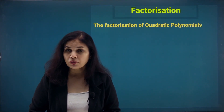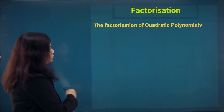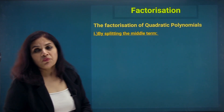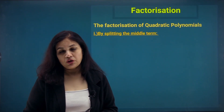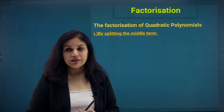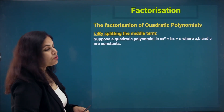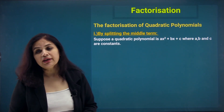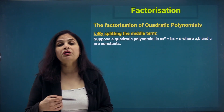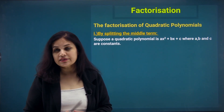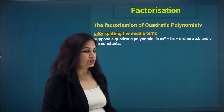When talking about quadratic polynomials, we are talking about polynomials of degree 2. The most common method of factorizing a quadratic polynomial is the middle term split method. Suppose we have a quadratic polynomial ax² + bx + c. It is quadratic because the highest degree of the variable is 2, and a, b, c are the constants.